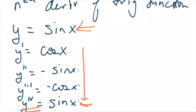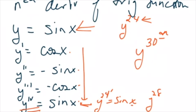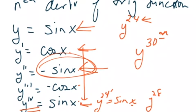Every fourth derivative I'm right back to the sine function. So if I was trying to find the 24th derivative, since 24 is divisible by 4, the 24th derivative is going to be sine of x. But if I'm looking for the 30th derivative, the 28th derivative puts me right back at sine, making that the 29th derivative position, which makes negative sine of x the 30th derivative.